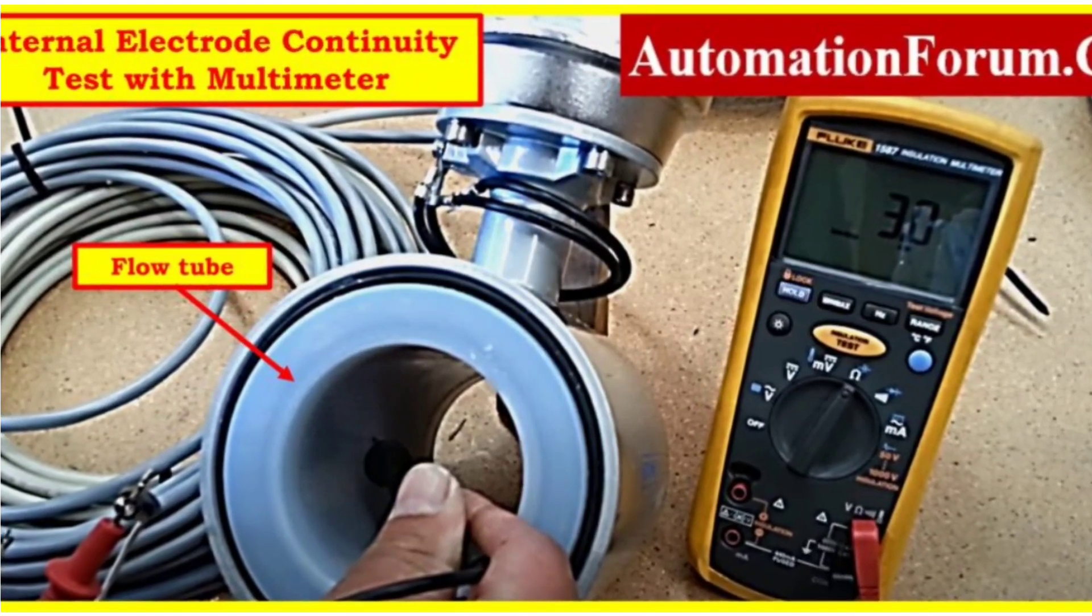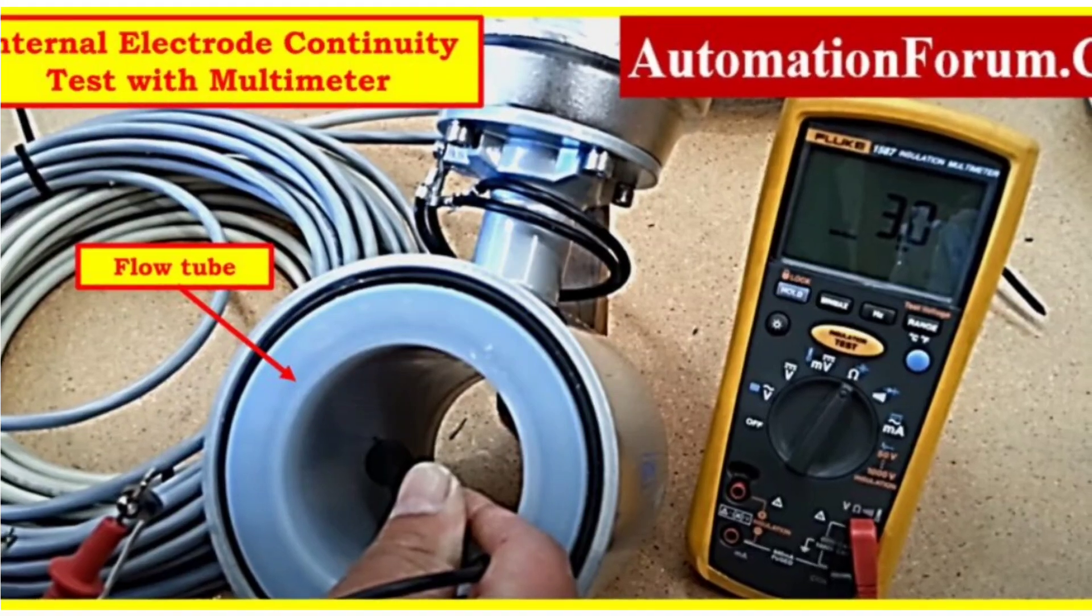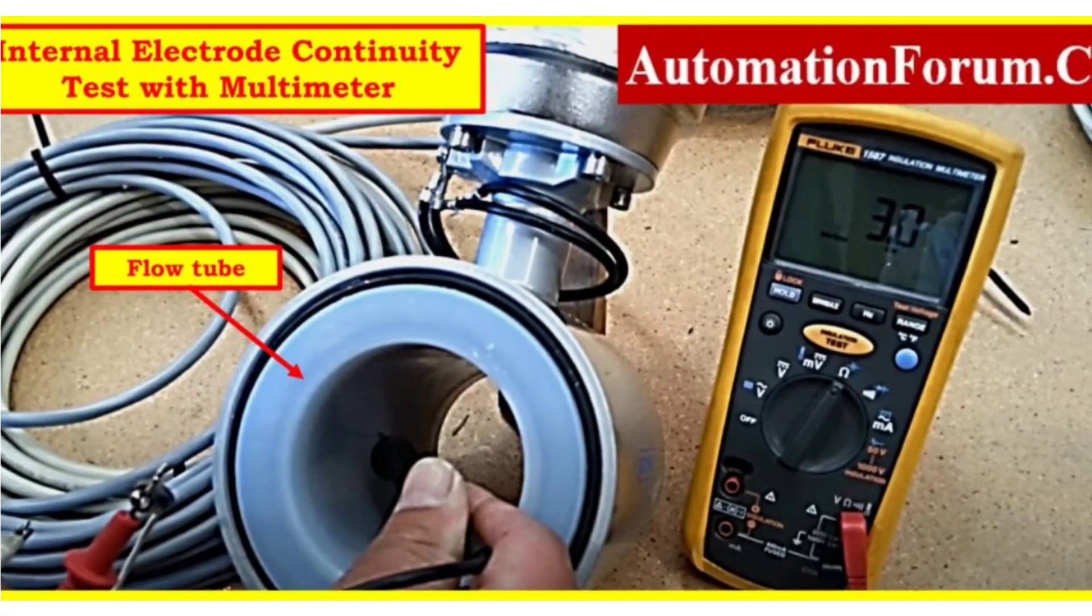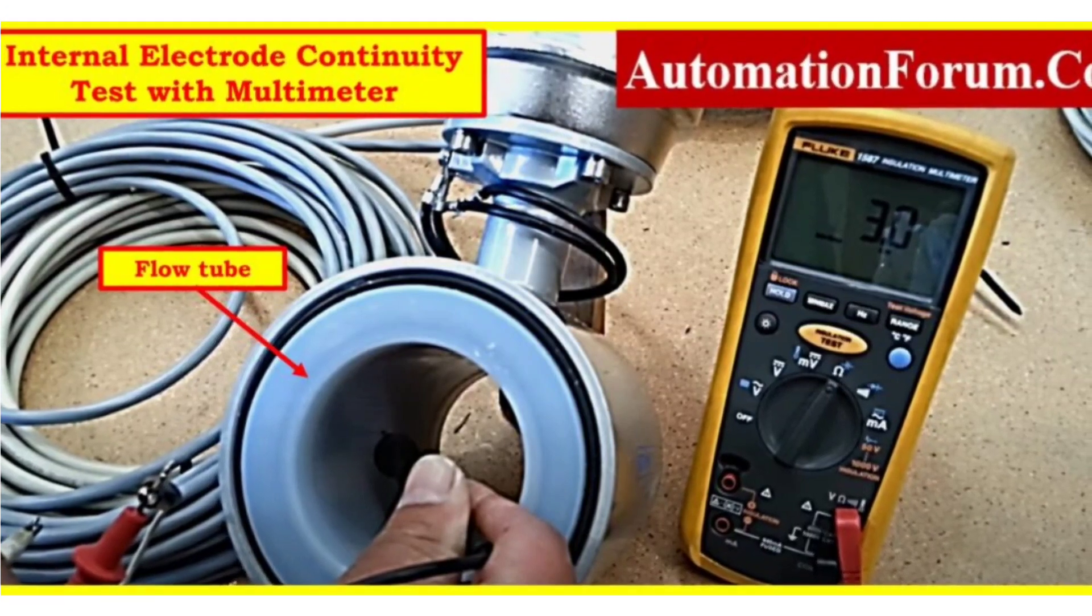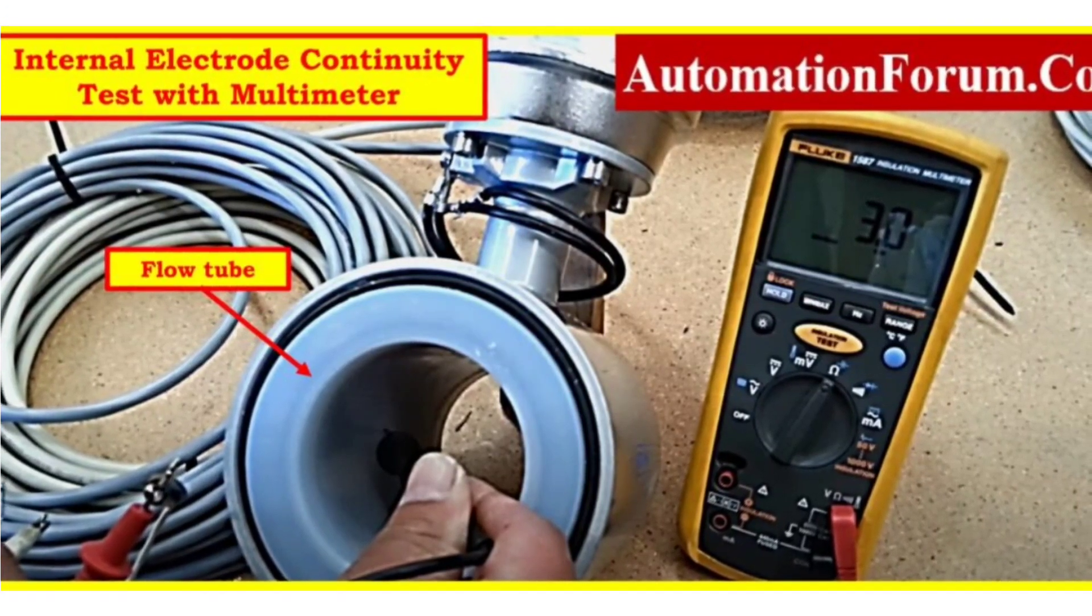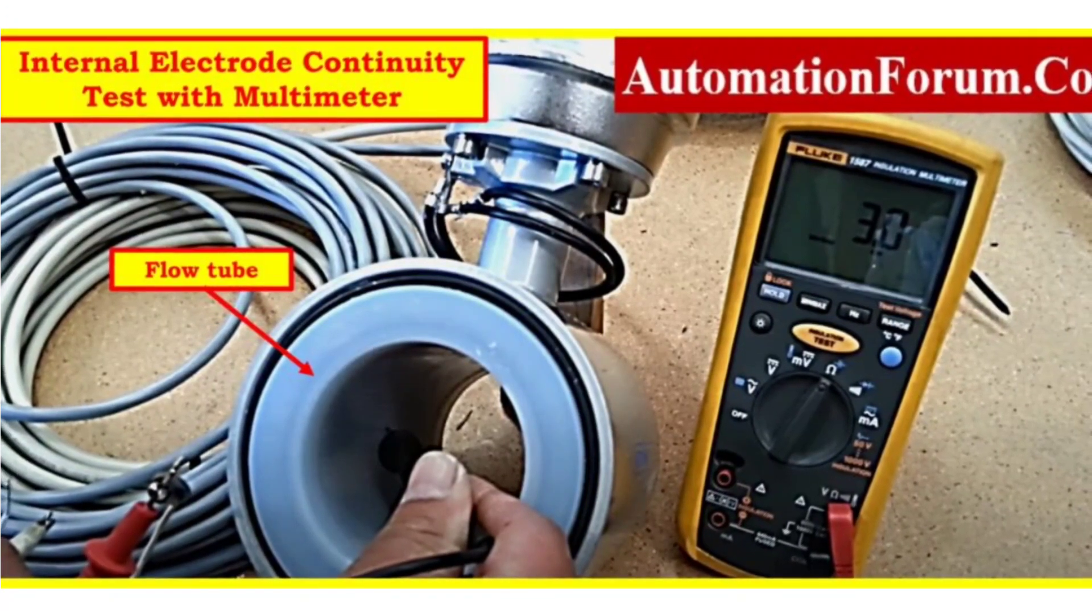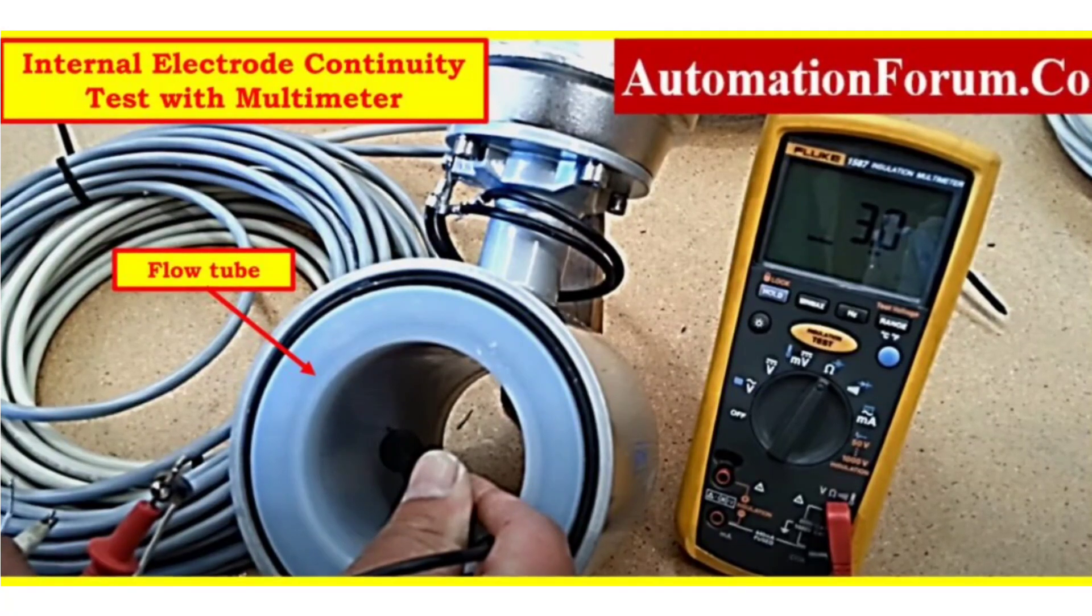Measure the resistance across the coil terminals, typically labeled as Coil Plus and Coil. The resistance should typically be within the manufacturer's specified range, which can vary depending on the flow meter model but is usually between 100 and 1000 Ohms.